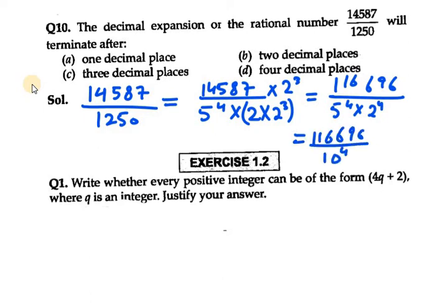10 raised to power 4. So this is the law, using laws of exponent, we can write 10 raised to power 4. Now, when we have 10 raised to power 4, this means 10,000.